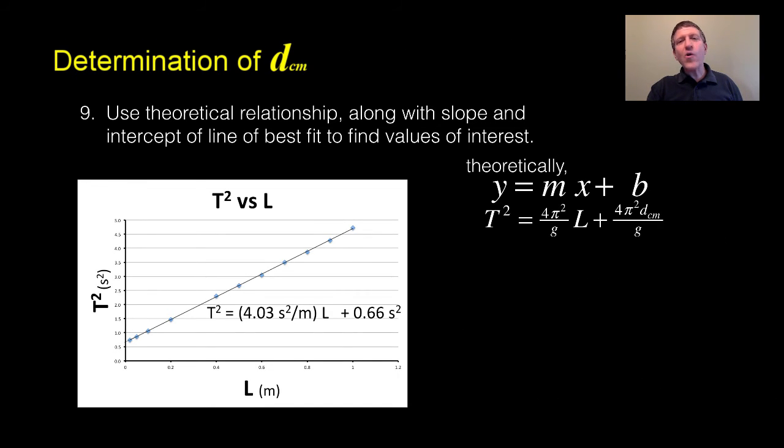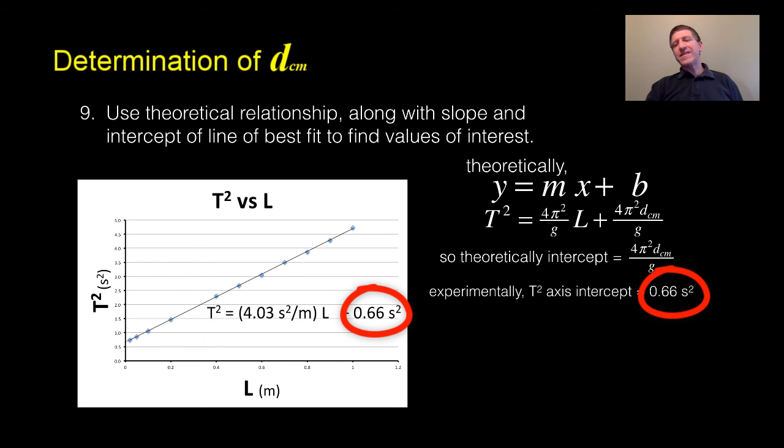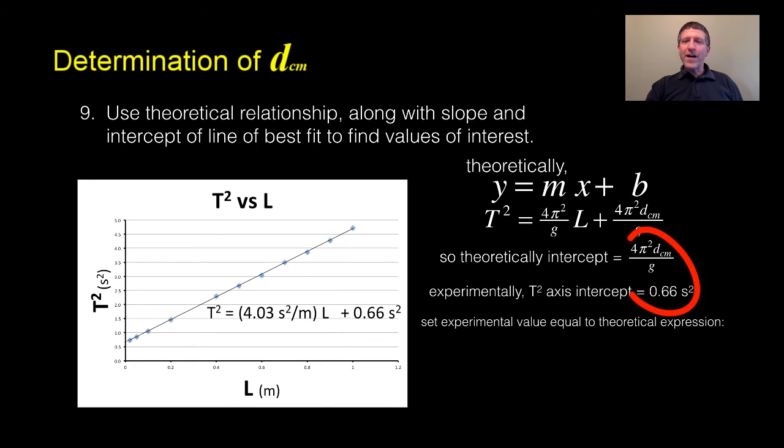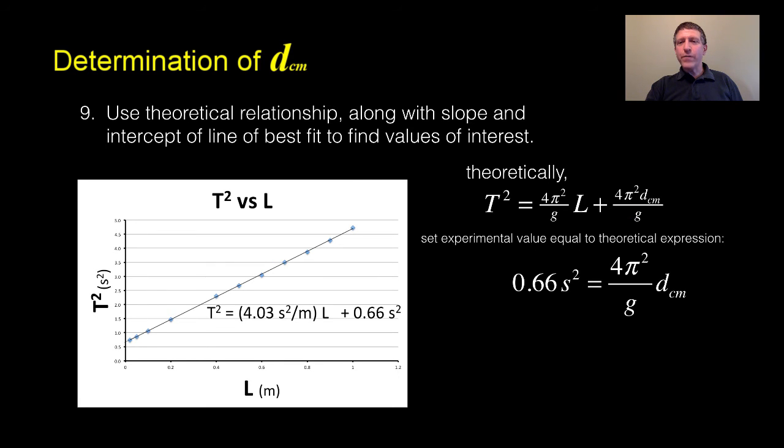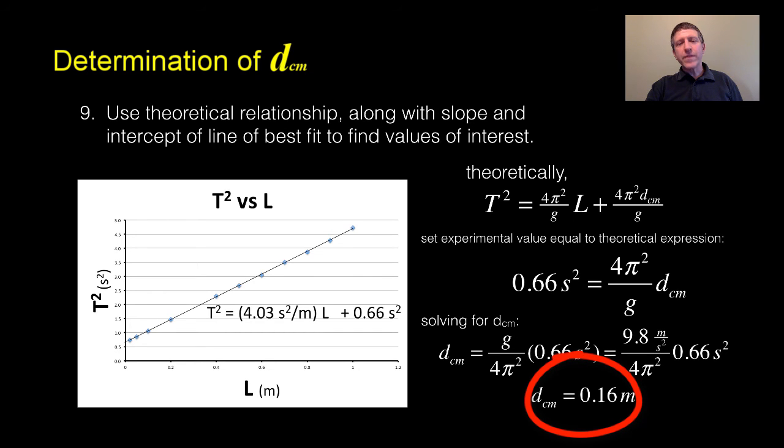We can also find out other stuff from this. Now, look at where the b in y equals mx plus b lines up. Theoretically, our intercept should be 4π² times the distance from the rope end to the center of mass of the bottle over g. So I can actually find out what that unknown distance that I misjudged my length by is. So, experimentally, what I got on my intercept was 0.66 seconds squared. So all I got to do is set the experimental value equal to the theoretical value. I'm just going to solve for d right there. d to the center of mass is 0.16 meters. That's what theory says.